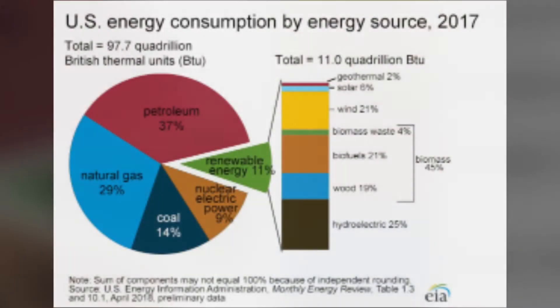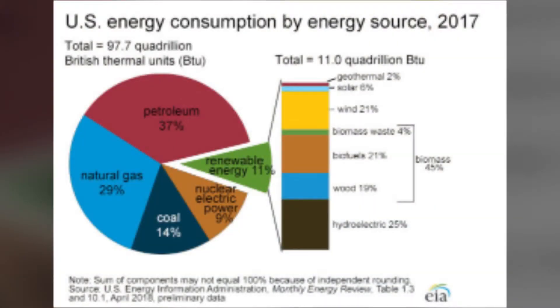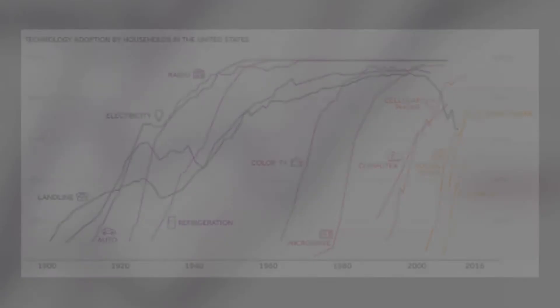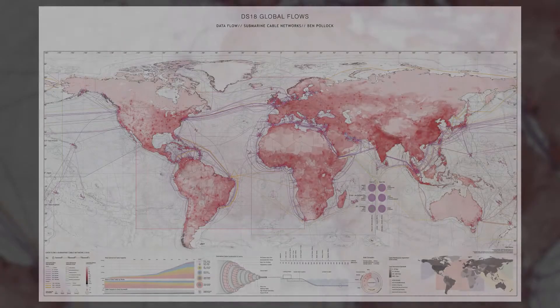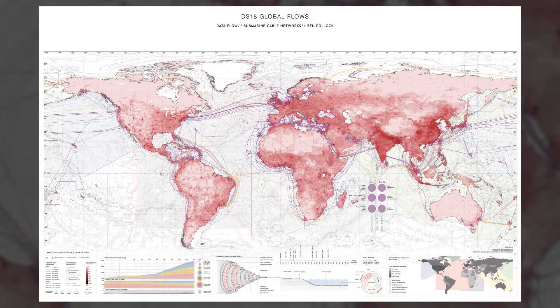The third is energy sources and consumers in the U.S. The fourth is the rate of technology adoption — what an interesting graph. The fifth is the world of submarine information cables.